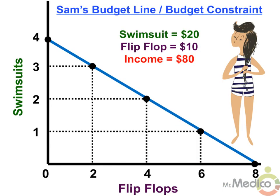We can create a budget line like this one to see her possibilities. Given her budget of $80, she can afford a maximum of four swimsuits, provided that she doesn't buy any flip-flops. At the other extreme, she can afford to buy eight pairs of flip-flops, provided she doesn't buy any swimsuits.